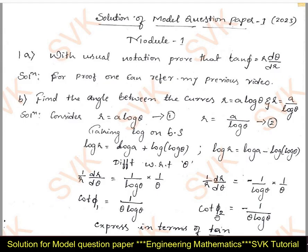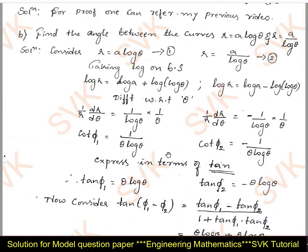Similarly, from the second curve, we get cot φ₂ = −1/(θ·log θ). Since we cannot express the right-hand side directly in terms of cot, we express the solution in terms of tan. Taking the reciprocal on both sides, tan φ₁ = θ·log θ and tan φ₂ = −θ·log θ.